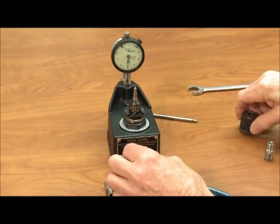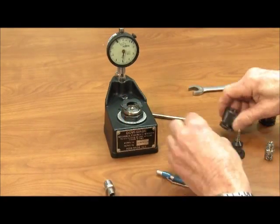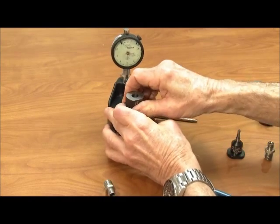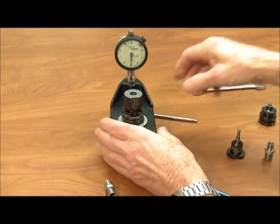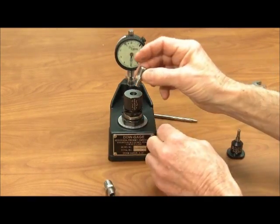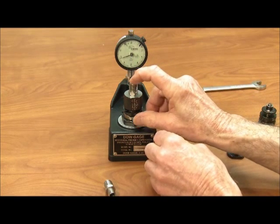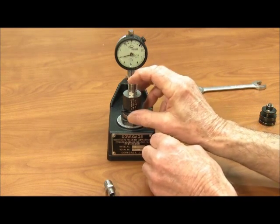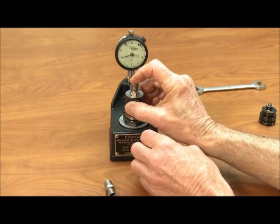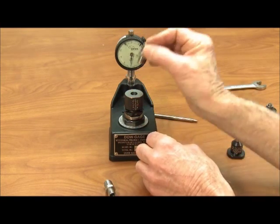The fourth check of this same part is for the shoulder length. The part is dropped onto the gauge, depressed, and the shoulder length is checked. In this case the allowable length is plus or minus four thousandths.